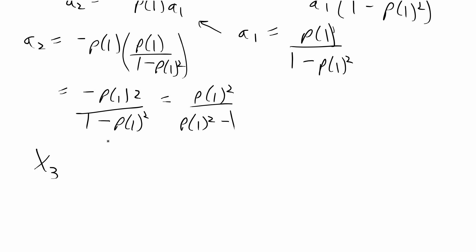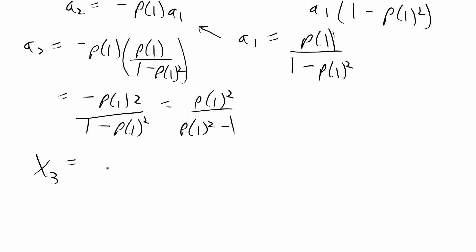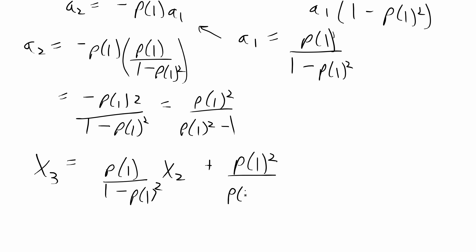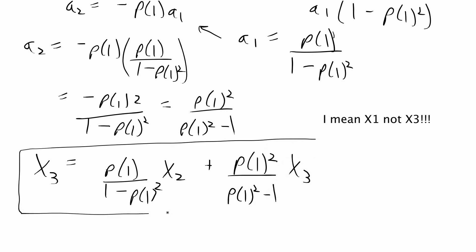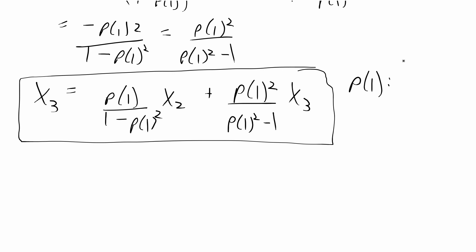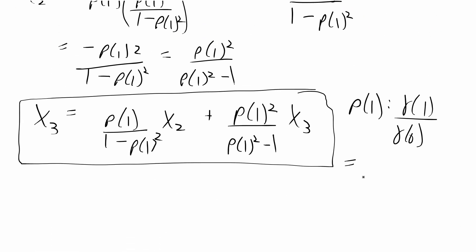The best linear predictor for x3 given x1 and x2 is: [rho_1/(1 - rho_1^2)]*x2 + [rho_1^2/(rho_1^2 - 1)]*x1. To express rho_1 explicitly for an MA1 model: rho_1 = gamma_1/gamma_0. The variance gamma_0 = sigma^2*(1 + theta^2), and the lag-1 covariance gamma_1 = sigma^2*theta, so rho_1 = theta/(1 + theta^2). That is the final answer for the best linear predictor.